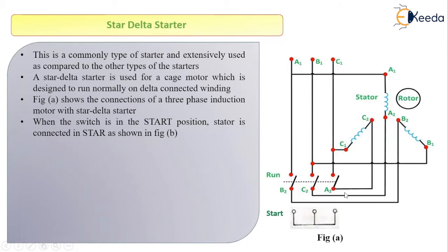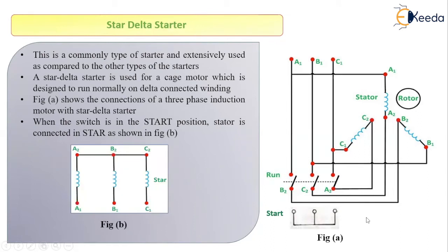The changeover switch can be at the start or at the run position depending upon the requirement. When we are starting the induction motor, the changeover switch will be at the start section. So the B2 terminal will be connected here, C2 terminal will be connected here, and A2 terminal will be connected here. At starting, B2, C2 and A2 terminals of the changeover switch are connected in this way.